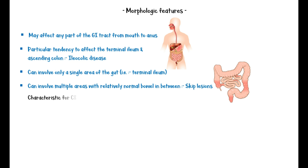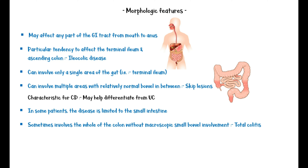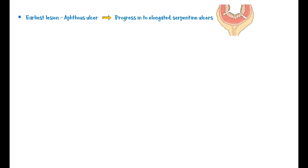Skip lesions are characteristic for Crohn's disease and may help differentiate it from ulcerative colitis. In some patients the disease is limited to the small intestine; sometimes it involves the whole colon without macroscopic small bowel involvement, known as total colitis. Stricture formation is common, and the intestinal wall is thickened and rubbery as a consequence of edema, inflammation, and submucosal fibrosis. The earliest lesion is known as the aphthous ulcer, which can progress into elongated serpentine ulcers.